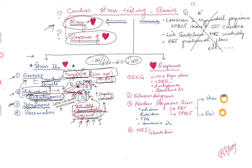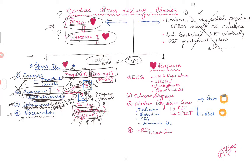If the patient cannot exercise and cannot receive regadenoson, you can use dobutamine to stress the heart. It is a dobutamine infusion with different protocols; essentially you are increasing their heart rate to approach the target heart rate. Last but not least, if there is no other way to stress the heart and the patient has a pacemaker, you can ask the pacemaker representative to come to the lab and increase the heart rate by adjusting the pacemaker settings.